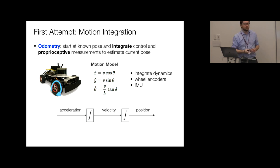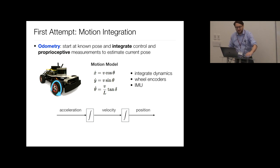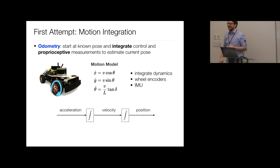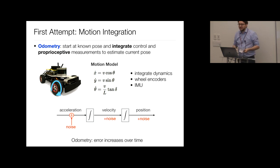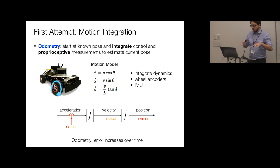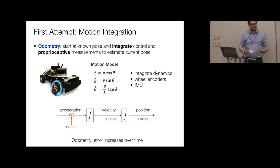What is the issue with pure odometry? If you have a little noise on sensor data, the integration process turns constant noise into a ramp — quadratically increasing noise after double integration. This leads to accumulation of error, and your trajectory estimate will diverge from the ground truth. Odometry always has this drift: error increases over time.